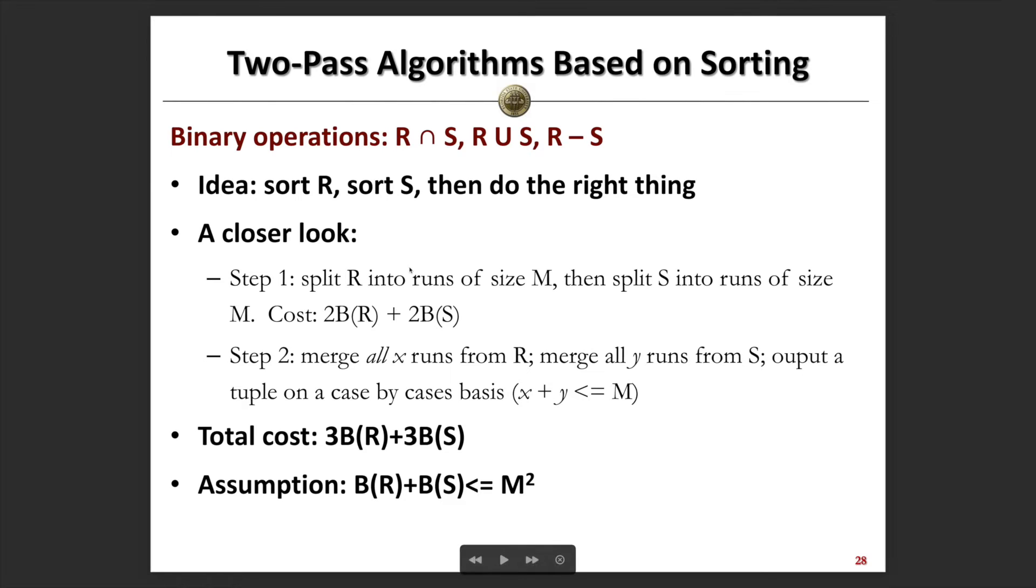We can find the union and join between two relations, and we can also find the unique tuples which exist in R only and don't exist in S. According to the specific operation we're working on, we can find the target results in the merging process.